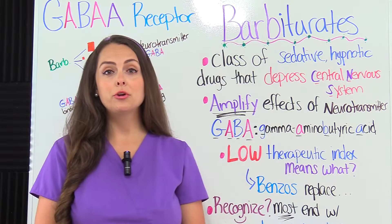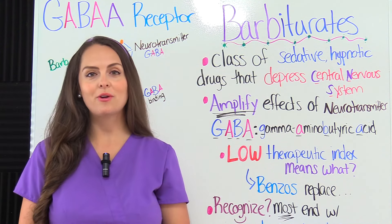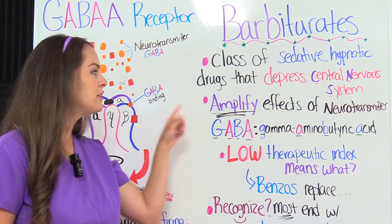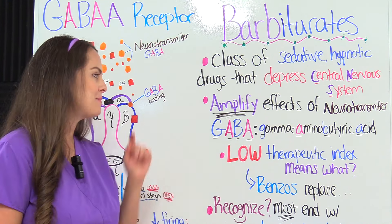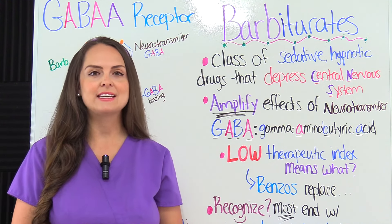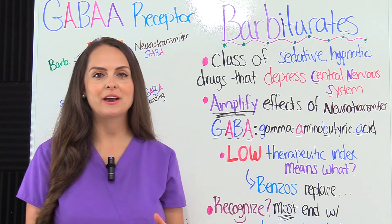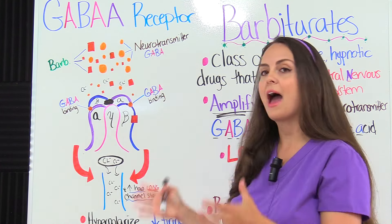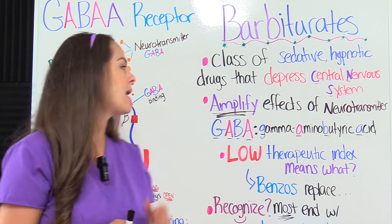Barbiturates are a class or group of sedative hypnotic drugs that actually depress our central nervous system. They do this by amplifying the effects of a specific neurotransmitter called GABA — gamma-aminobutyric acid — which is an inhibitory neurotransmitter. We'll talk more about this when we discuss the mechanism of action, but keep that concept in mind.